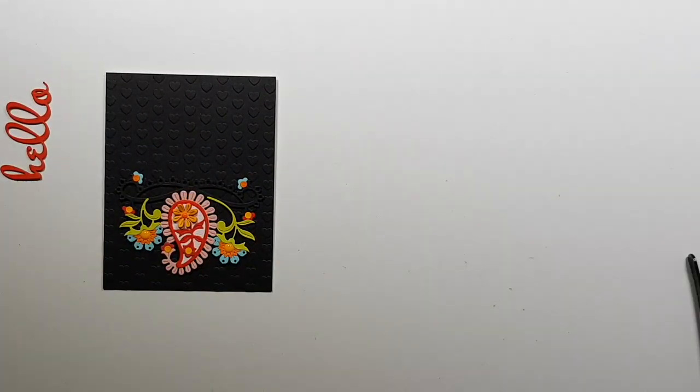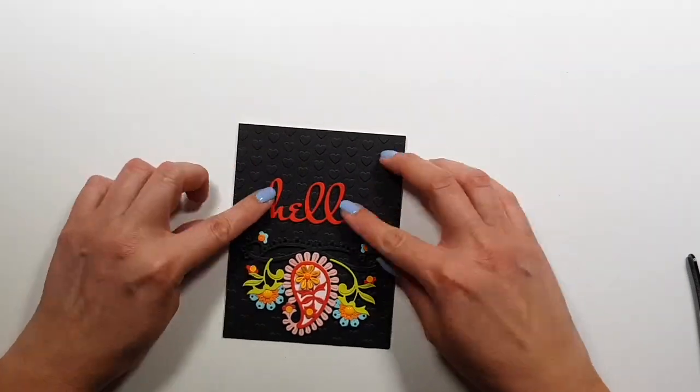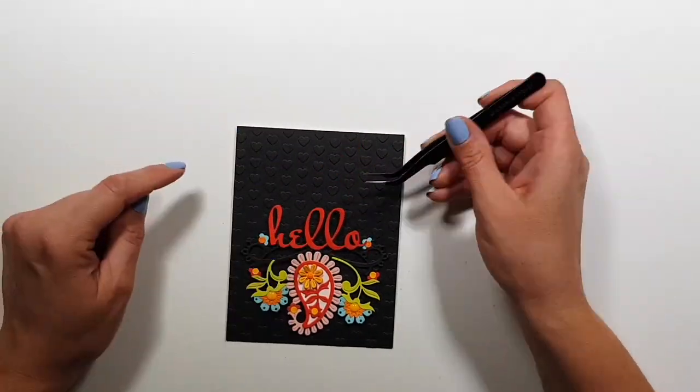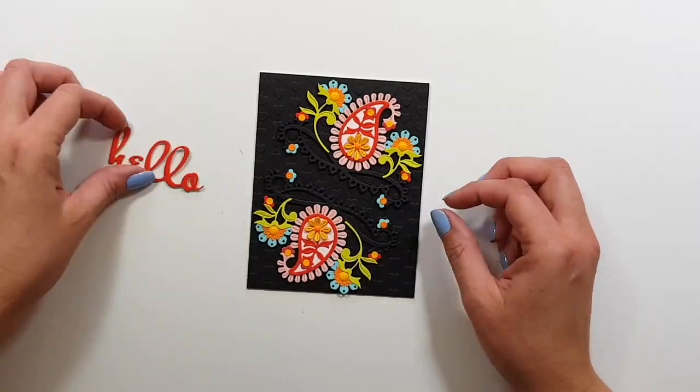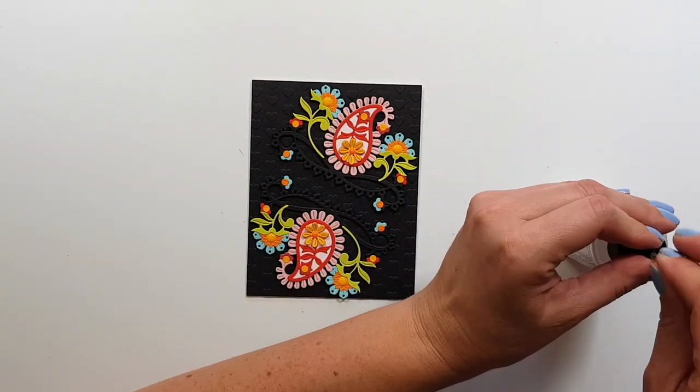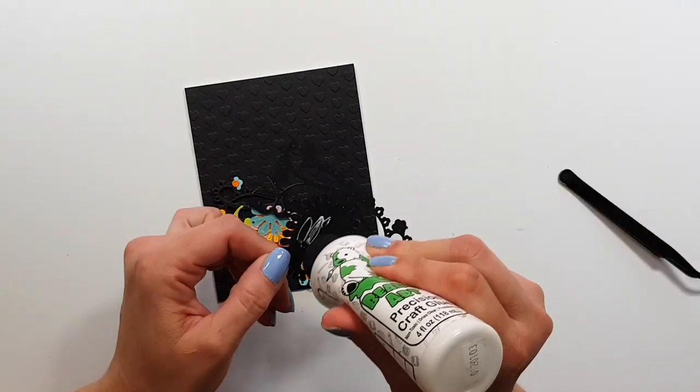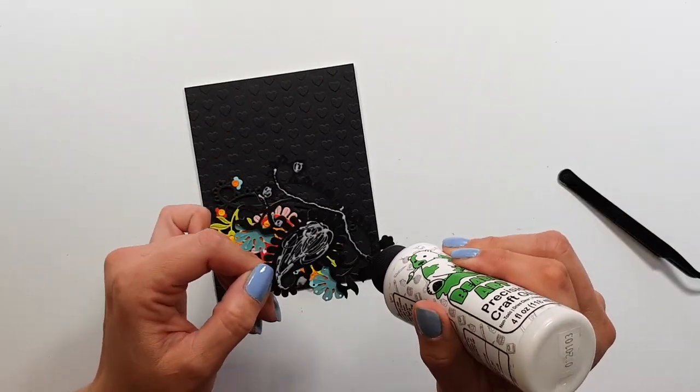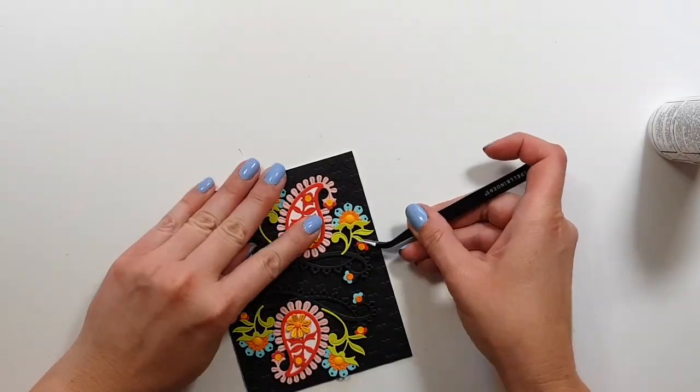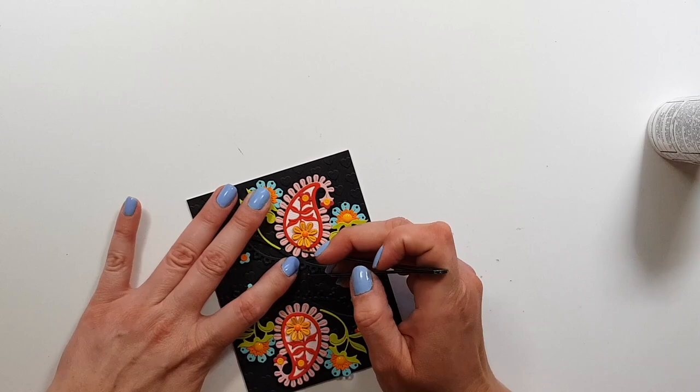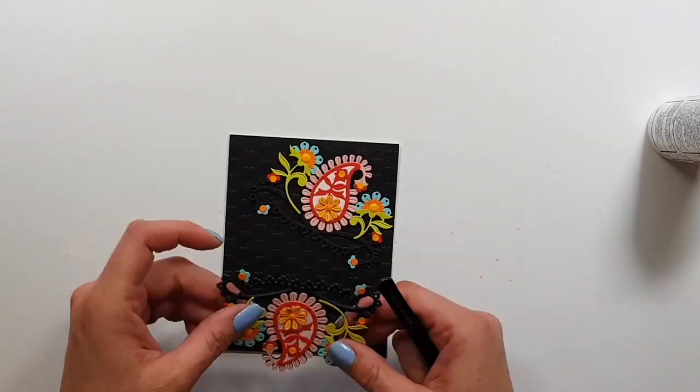Now my idea originally was to just do this, but that didn't seem to sit with me. So I created another one of these shapes and exactly the same way. And I'm adding both of them in kind of like an angled way.